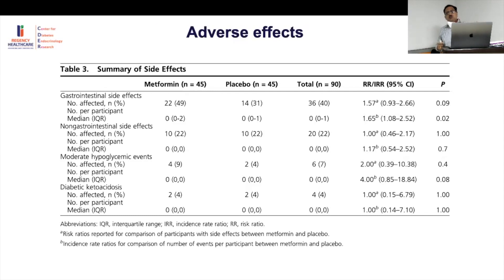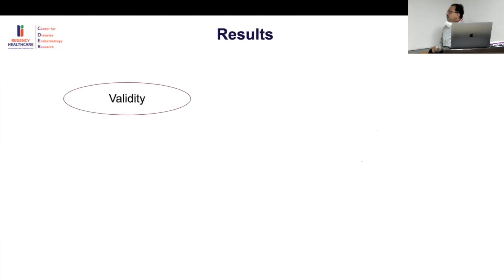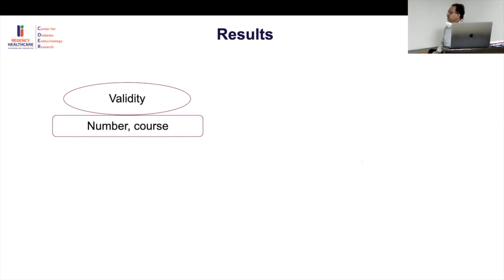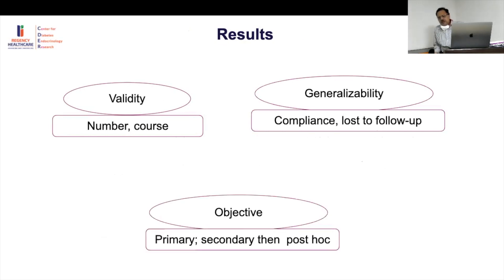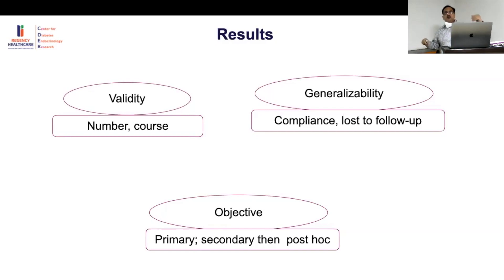In summary, metformin use was associated with improved glycemic control — lower HbA1c with a lower insulin dose. The validity question is whether this applies to our setting. Generalizability depends on compliance and follow-up. Primary objective is assessed first, then secondary, then post-hoc. Post-hoc subgroup analyses — such as comparing boys vs. girls or different BMI bands — are exploratory and must be taken with a pinch of salt, especially when the primary result is weak.